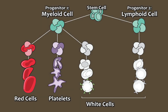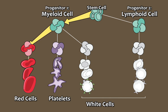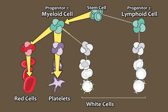The two progenitor cells form two primary branches of the blood and immune system family tree. The first of the progenitor cells is the myeloid stem cell, which matures and differentiates into blood cells, as well as platelets, which are fragments of cells, and thirdly, white blood cells, also known as leukocytes.